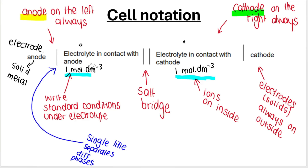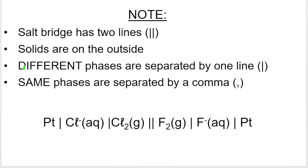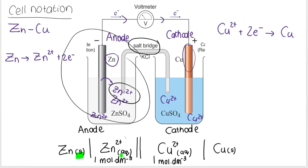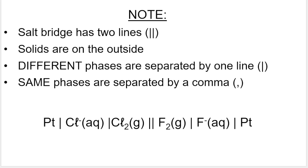The electrolyte in contact with the anode — we write the standard conditions underneath — and the electrolyte in contact with the cathode. Different phases are separated by one line, so a solid and an aqueous are separated with a solid line. If you had more than one of the same type of phase, you would separate those by a comma.